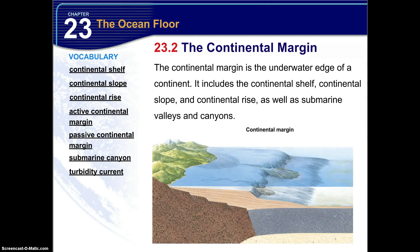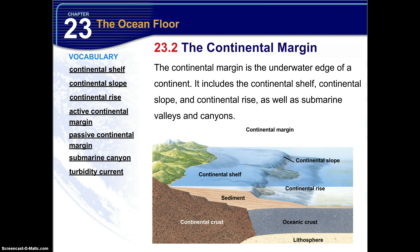So if we start with a cross section, we have continental crust, then we have oceanic crust, the lithosphere, we have the sediment built up on the ocean floor, we have the continental shelf, continental slope, and then we have the continental rise, and the abyssal plain. These features make up the continental margin.